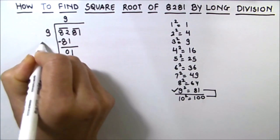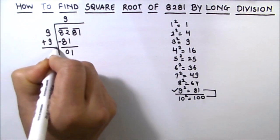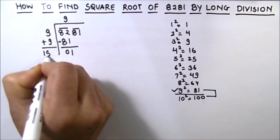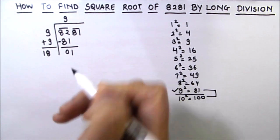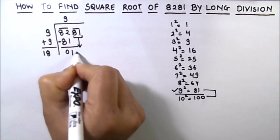Also, we are going to add the same number, which is 9, for our next divisor. So 9 plus 9 is 18, and we are going to annex one number here for our next dividend, which we will get by dropping down the next group, which is 81.